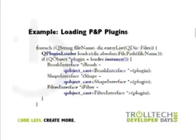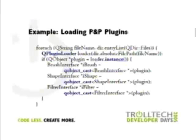This is typical code you'd have in the constructor of your application's main window, where you iterate through a directory and use QPluginLoader to load files assumed to be plugins. First, you call the instance function to return a QObject representing the plugin. If this returns a valid pointer, it means you have a valid Qt plugin linking against a compatible version of Qt. Afterwards, you use QObjectCast to check which interfaces it implements, and use the result to access the plugin.